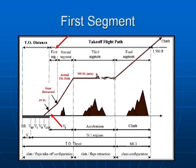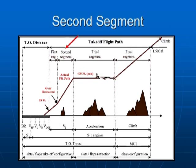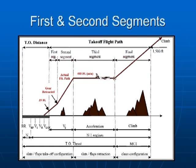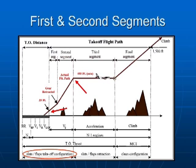The first segment picks up at the 35-foot point and continues through the gear retraction point. We then begin the second segment at gear retraction and terminate it at level-off height. The level-off acceleration height is a minimum of 400 feet, which is specified in the FARs. Manufacturers may use 400 feet as the sole altitude for accelerating during the third segment, or may provide a range of altitudes from 400 feet and above. During the first and second segments — from 35 feet to the level-off point — the aircraft is flown as close as practical to V2 speed using takeoff thrust, with slats and flaps remaining in the takeoff configuration.